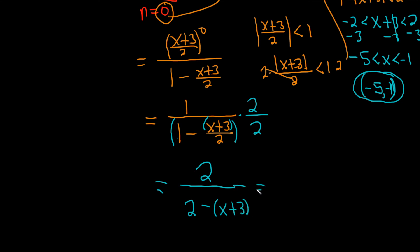So minus x minus 3, right, minus x minus 3. Almost there, this is 2 over 2 minus 3 is minus 1, so you get -1-x.